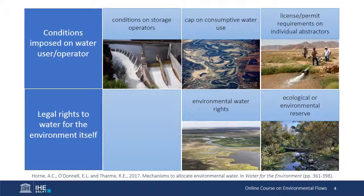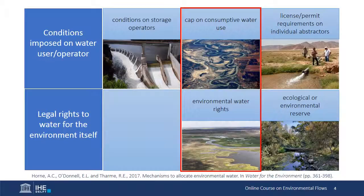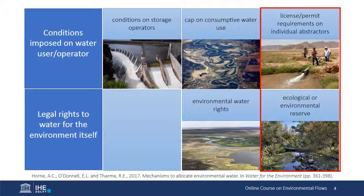Each is an independent mechanism, but they occur together in basin-scale e-flows implementation. The three mechanisms on the top row impose conditions on the water user or operator, while the two on the bottom row establish a legal right to water for the environment. Because we looked at conditions on storage operators during the last lecture, I'll say only a word or two about them, then consider the remaining four in tandem — first looking at the combination of a cap on consumptive water use and environmental water rights in the Murray-Darling basin, and then looking at a combination of license requirements on individual users and the ecological reserve in the Mara basin.